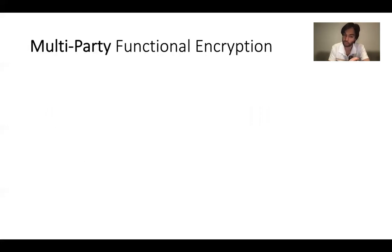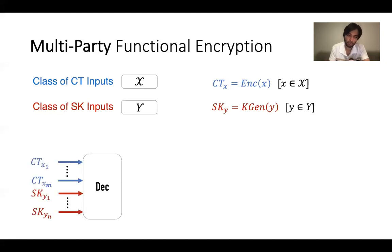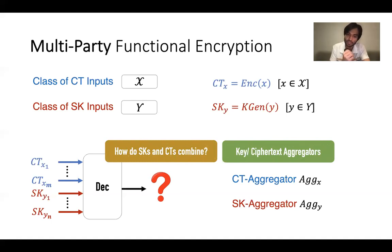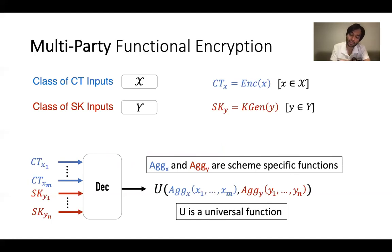In order to jointly capture ciphertext-policy and key-policy systems in functional encryption more holistically, we define input spaces for both ciphertexts and secret keys instead of defining a function space for each individually. The main point in MPFE is the possibility of combining multiple ciphertexts and secret keys during decryption to learn interesting function values. Our suggestion is to define two aggregation functions — one each for the ciphertext and secret key input spaces — tied to the underlying encryption system.